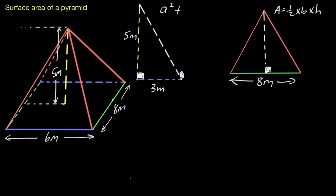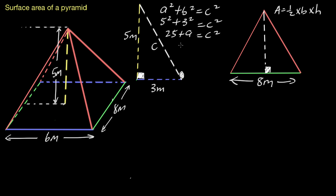Pythagoras: a² + b² = c², where c is the long side. So five squared plus three squared equals c squared. 25 plus 9 equals 34, so c squared is 34. To get c only, we take the square root: c equals the square root of 34. We'll leave this answer in exact form — if we use the decimal, that leads to rounding errors. So the slant height is the square root of 34.